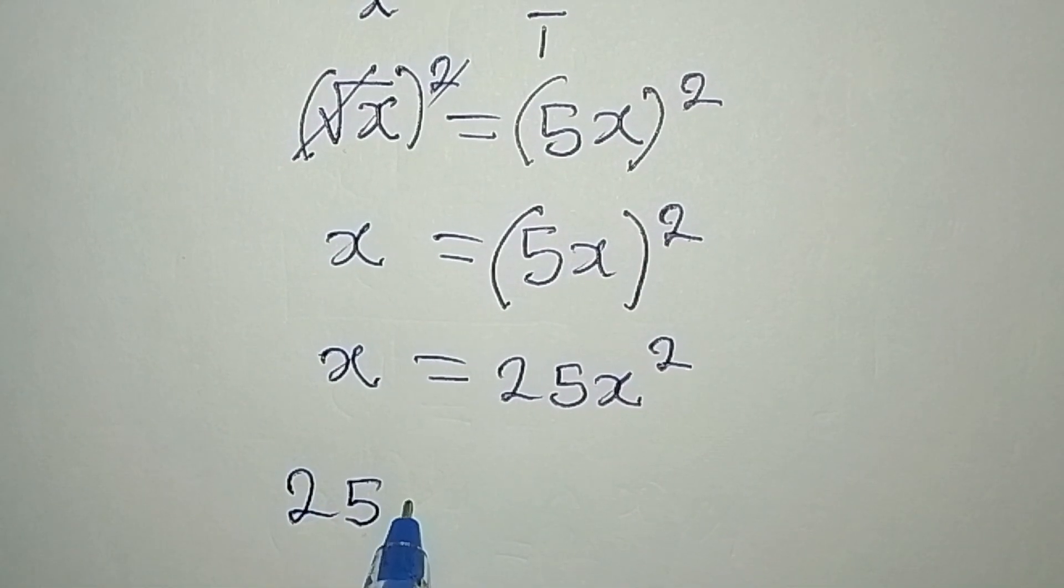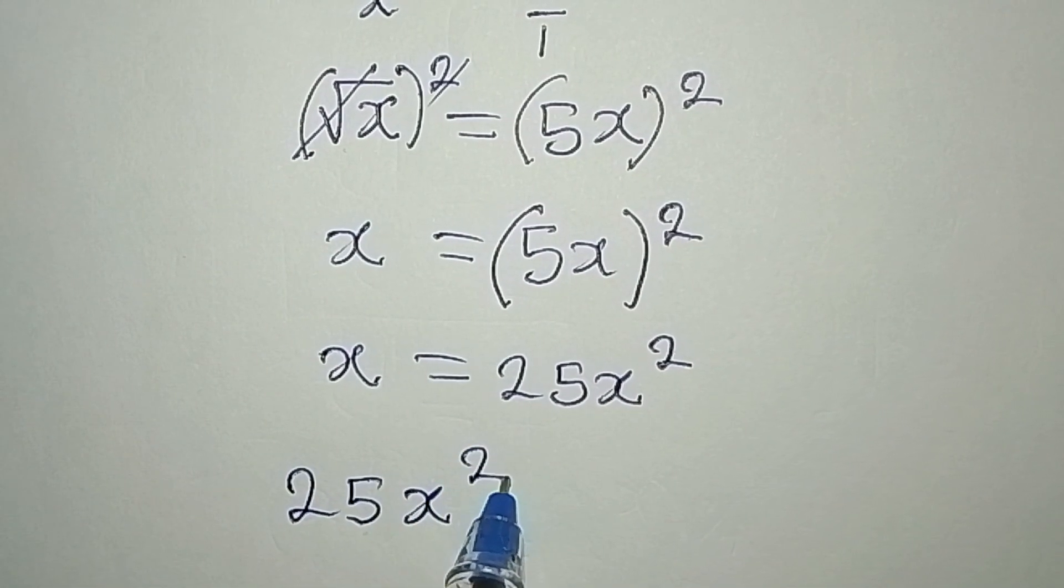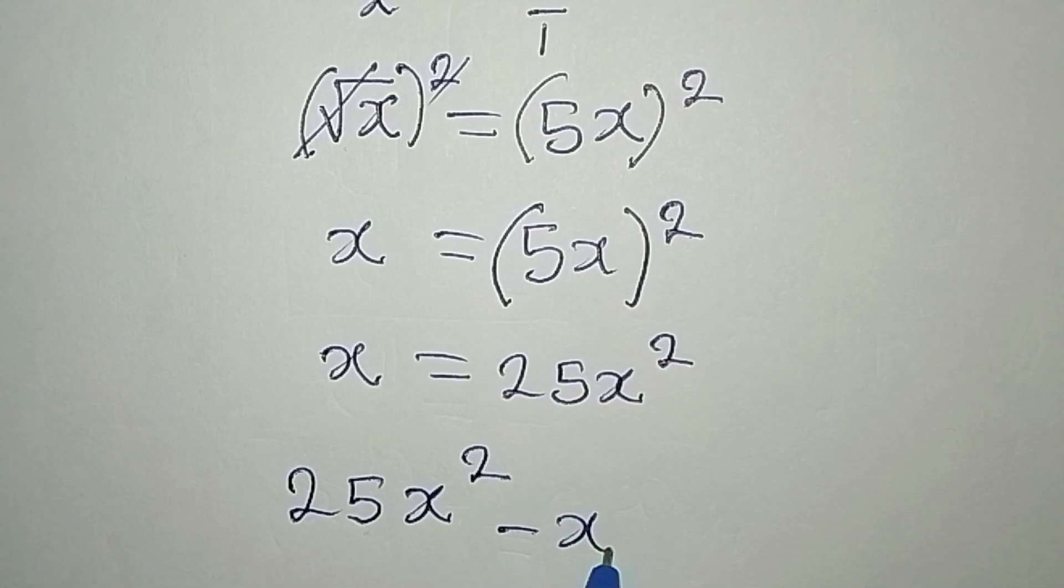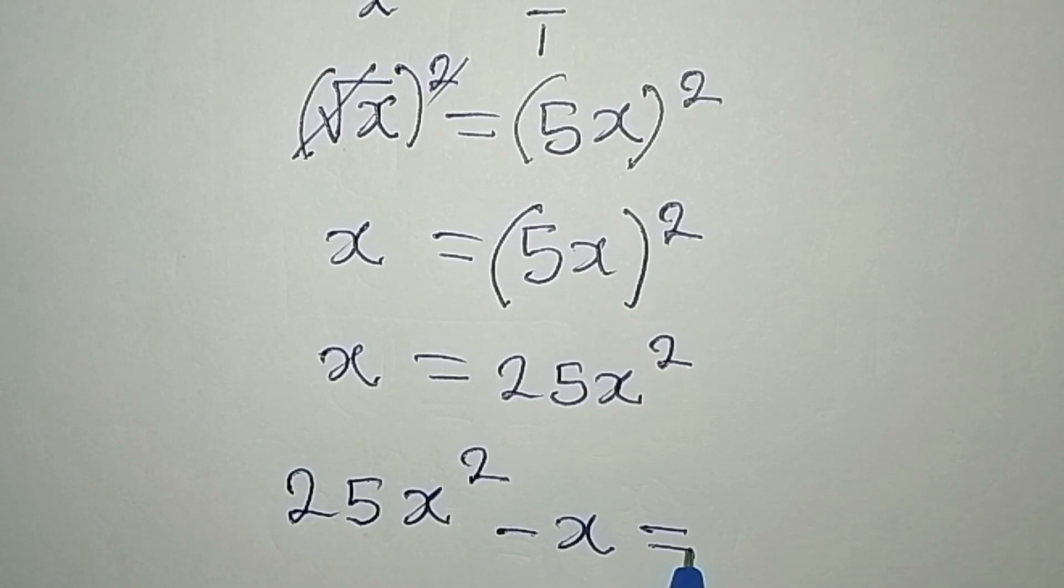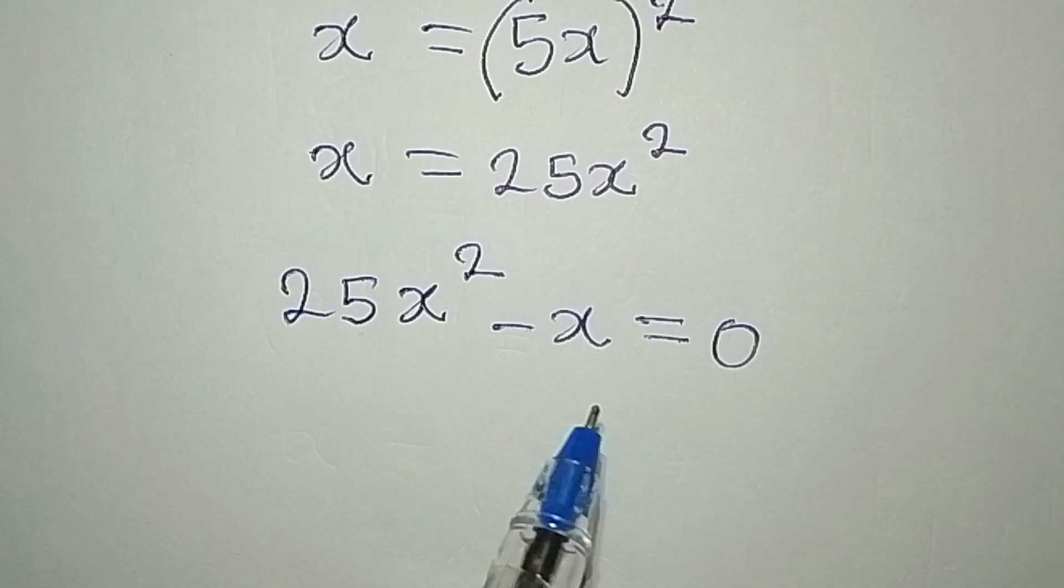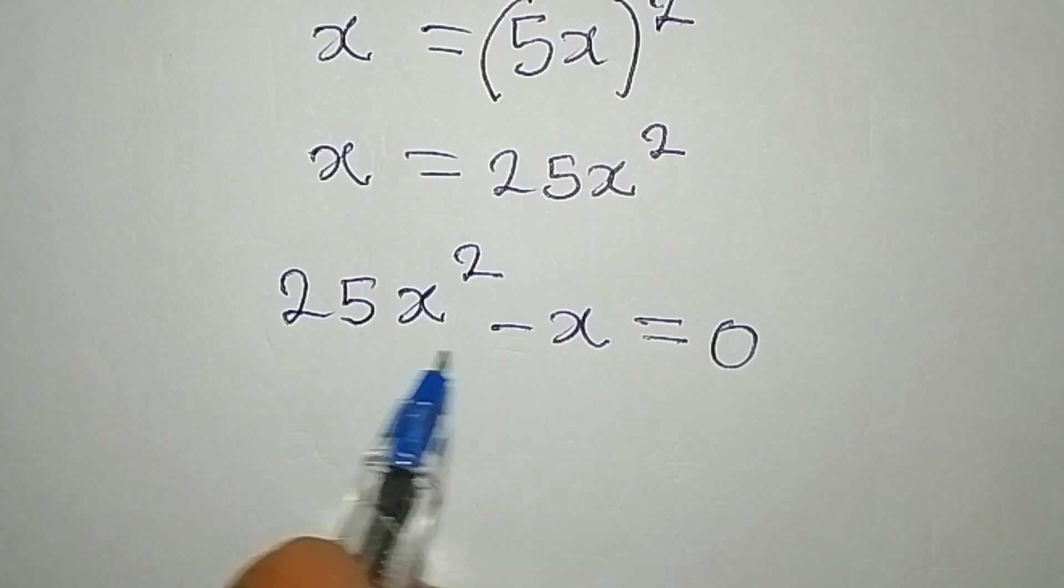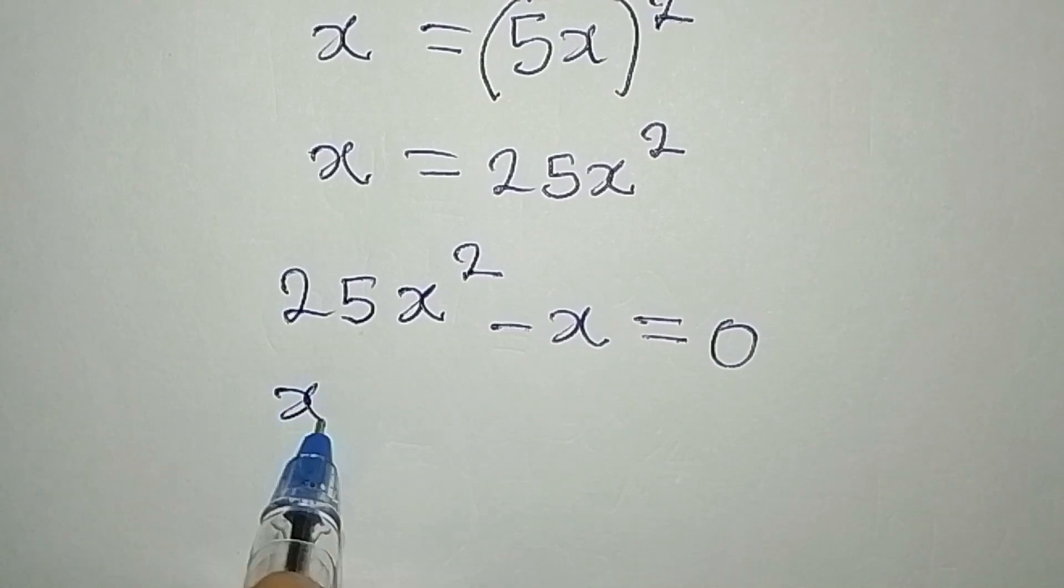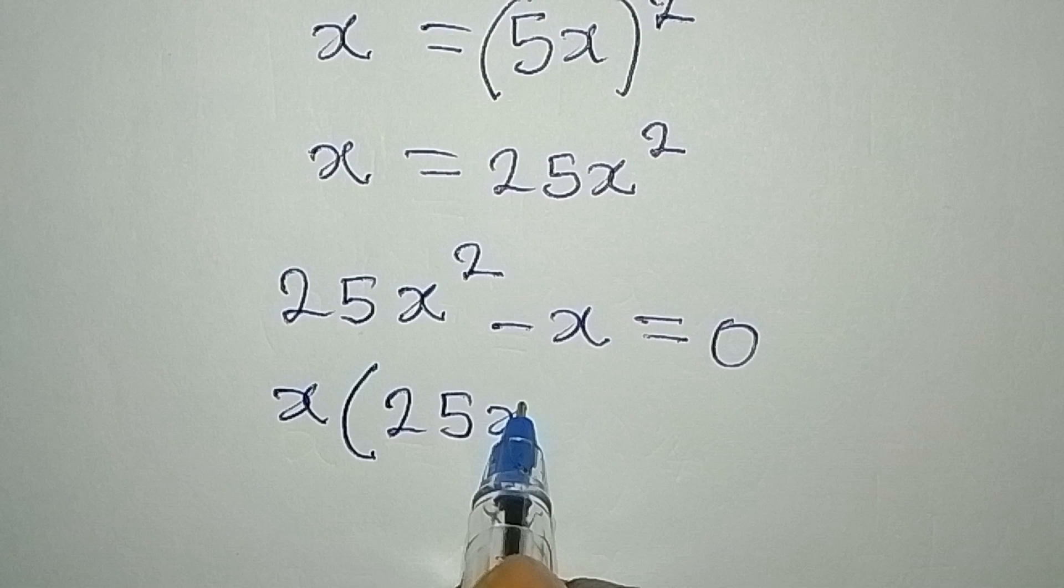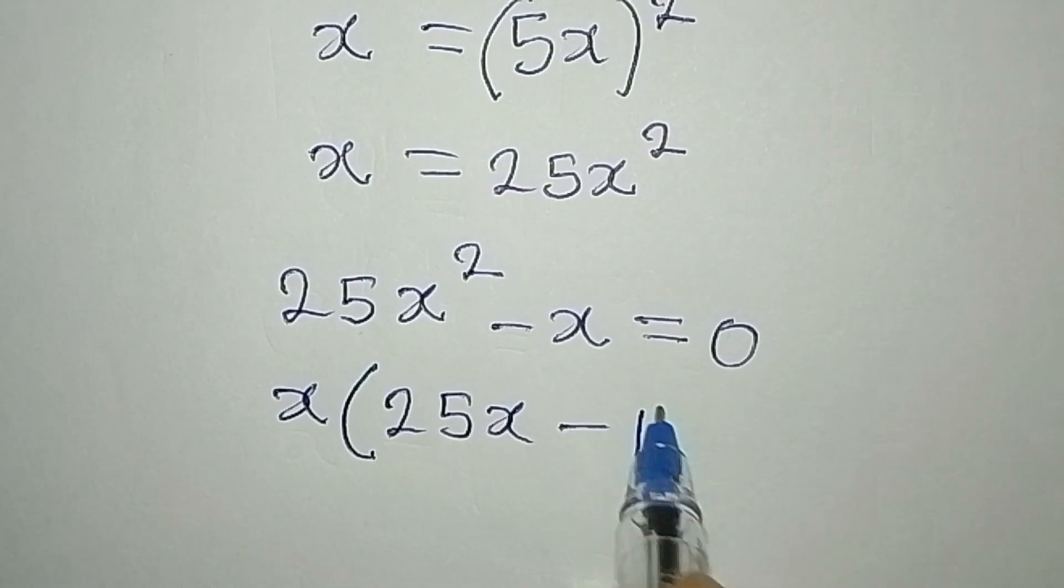Then this is coming to meet with this, so it turns to negative x, and there will be nothing again on the other side. Now we have x common to these two terms, so x is going to come out as a common factor. Then we have 25x minus 1, and then we equate the whole of this to zero.